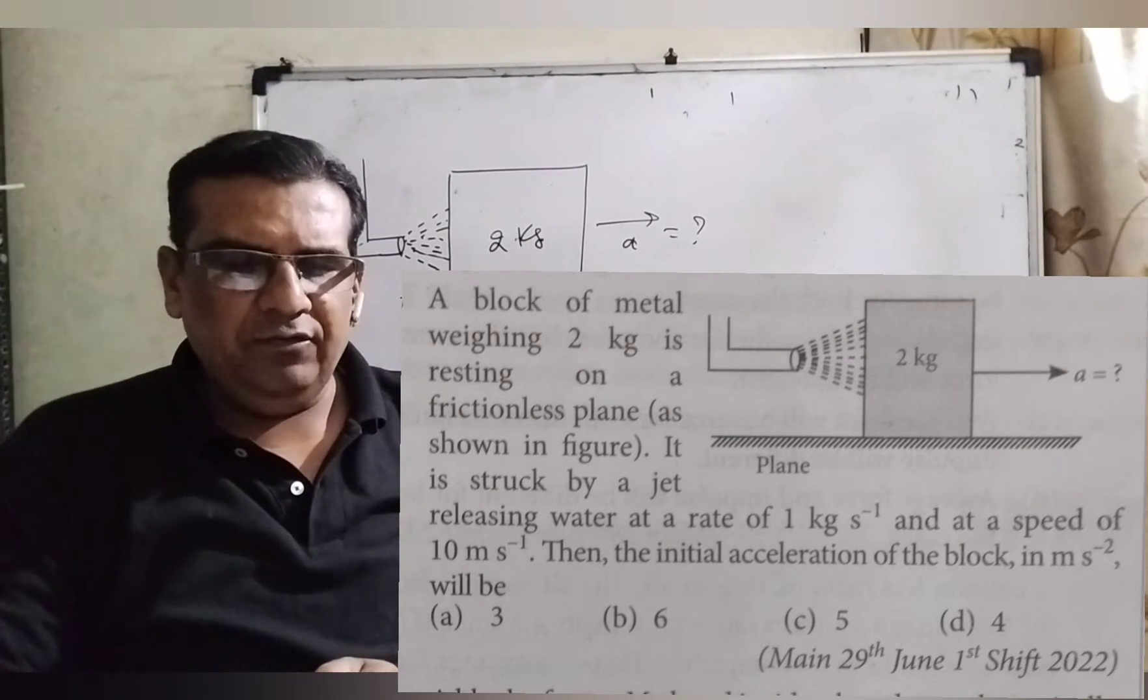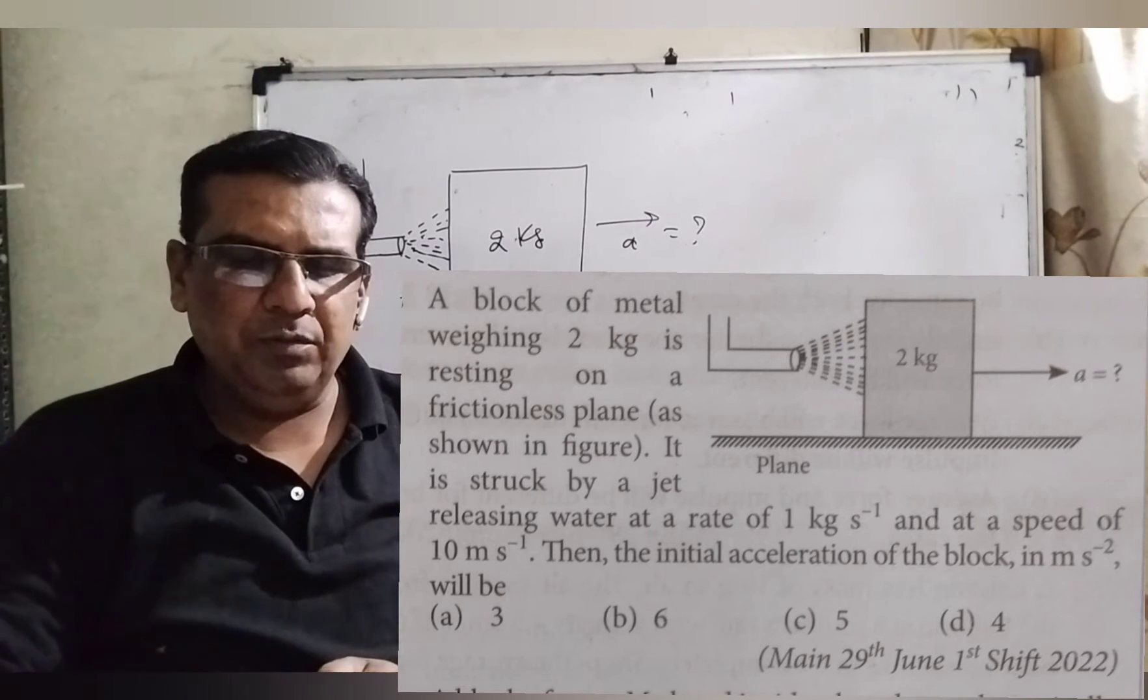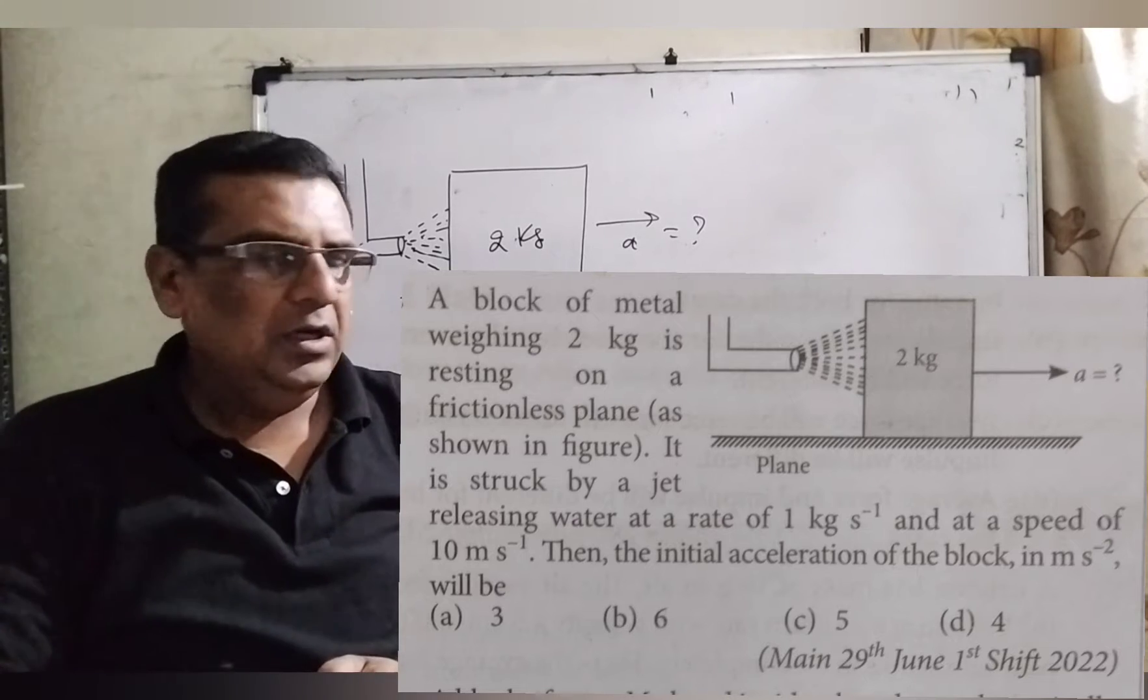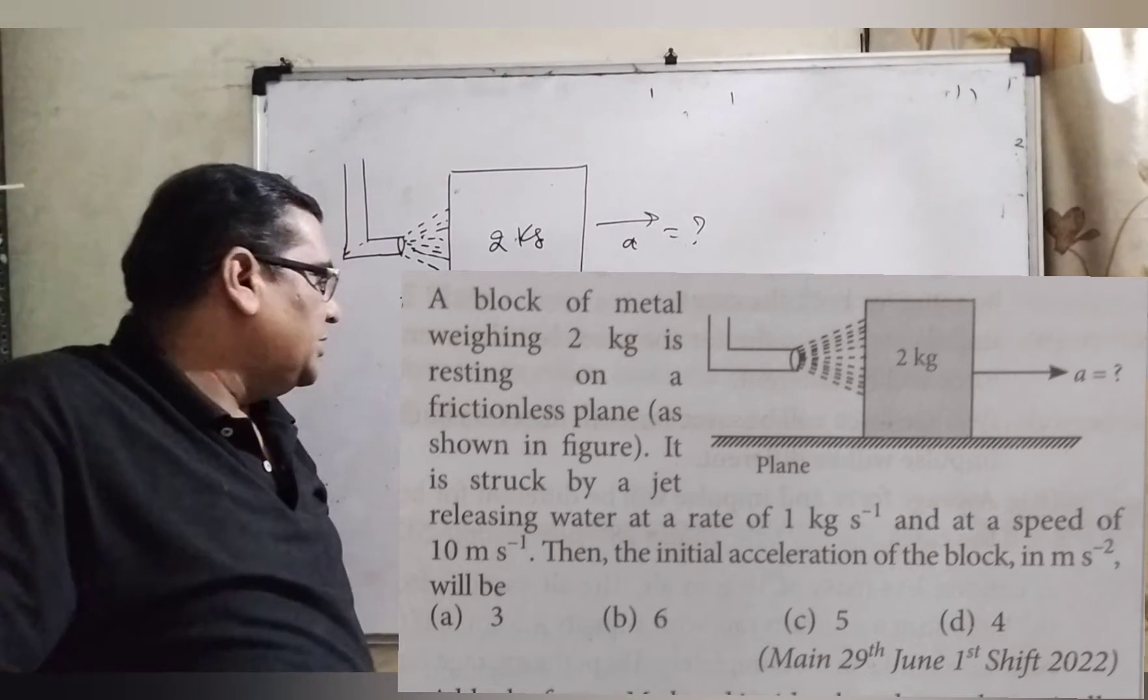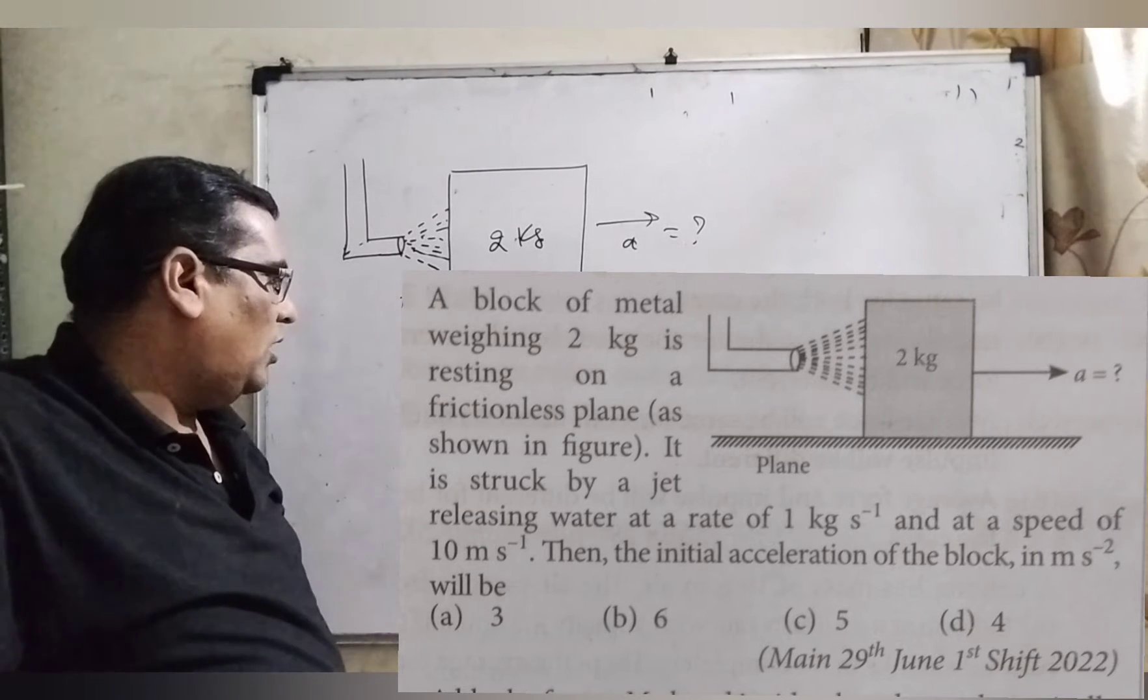and a speed of 10 meters per second. Then the initial acceleration of the block in meters per second squared will be—here we have given four options: A) 3 meters per second squared, B) 6 meters per second squared,